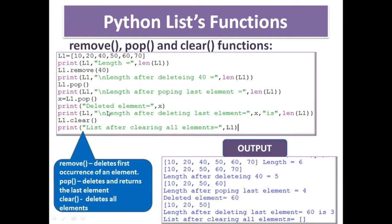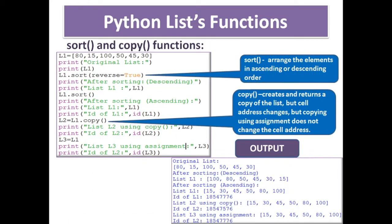So to summarize: remove deletes the first occurrence of a particular element from the list; pop deletes the last element; clear deletes all elements. Now, sort and copy — two methods. Sort function is for sorting the values in ascending or descending order within the list, rearranging the elements.